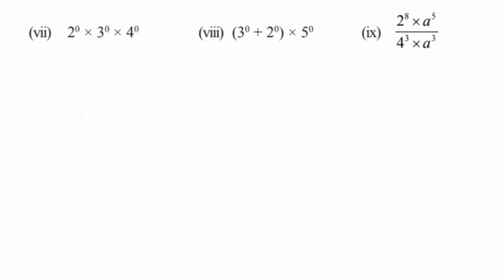Seventh question: same technique — anything to the power 0 equals 1. So we have 2 to the power 0 multiplied by 2 to the power 0 multiplied by 2 to the power 0, which is 1 multiplied by 1 multiplied by 1, equal to 1. The answer is 1.